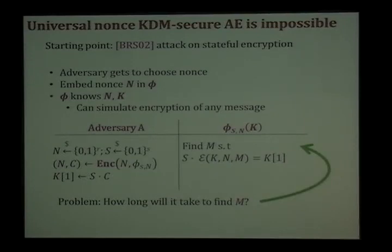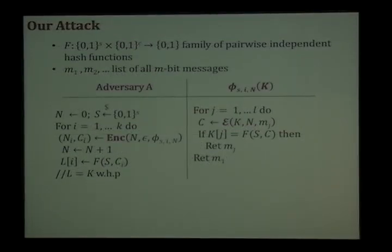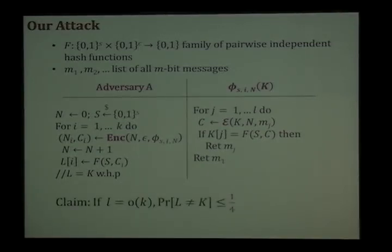This attack seems to work, but there's one problem: we don't know how long phi will run before finding a suitable M. We can fix this easily by putting a bound L on the running time of phi — saying it can only try L times — where L is a parameter provided to the adversary. If phi does not find the required message within L tries, it outputs some arbitrary message. And instead of a dot product, we use a family of pairwise-independent hash functions. We can show that if we choose L to be comparable to the number of bits in the key, then the adversary recovers the key with high probability.